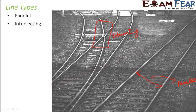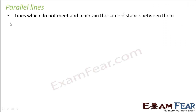Basically, when two lines are located in such a way that the distance between them remains the same throughout, they are called parallel lines. Intersecting lines means the two lines will cross over each other. Parallel lines will never meet — they do not meet, and therefore they maintain the same distance between them.